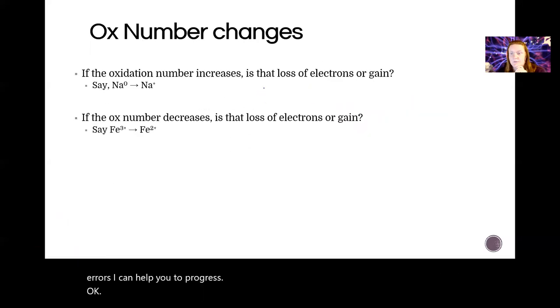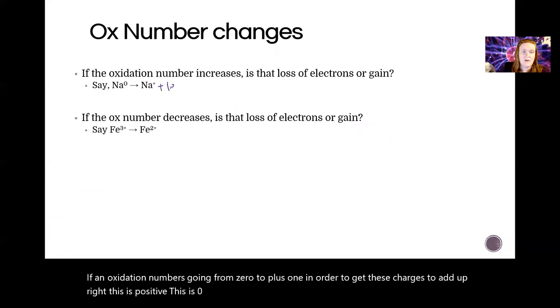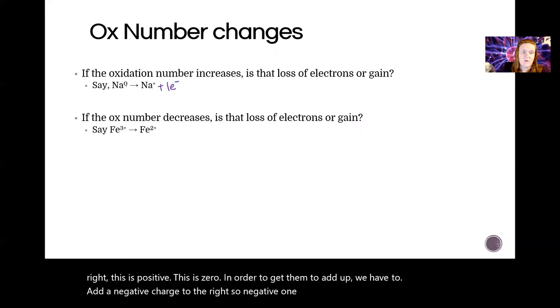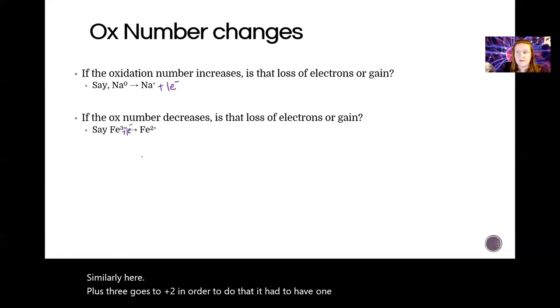Okay, so just to review real quick: if an oxidation number is going from zero to plus one, in order to get these charges to add up, we have to add a negative charge to the right. So negative one plus one is zero. Similarly here, plus three goes to plus two. In order to do that, it had to have one electron added as a reactant.